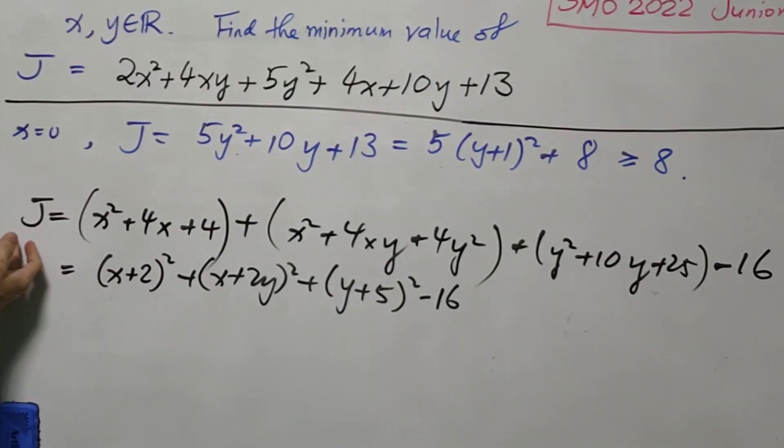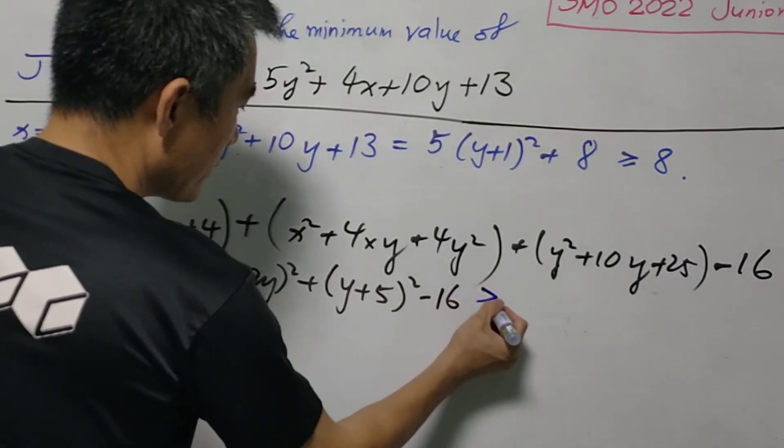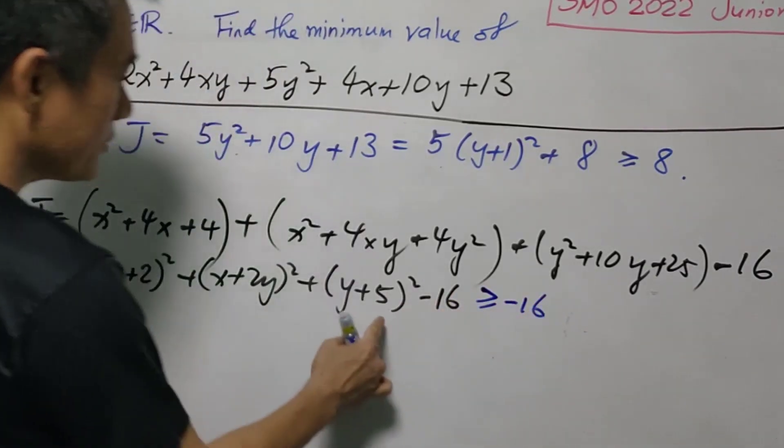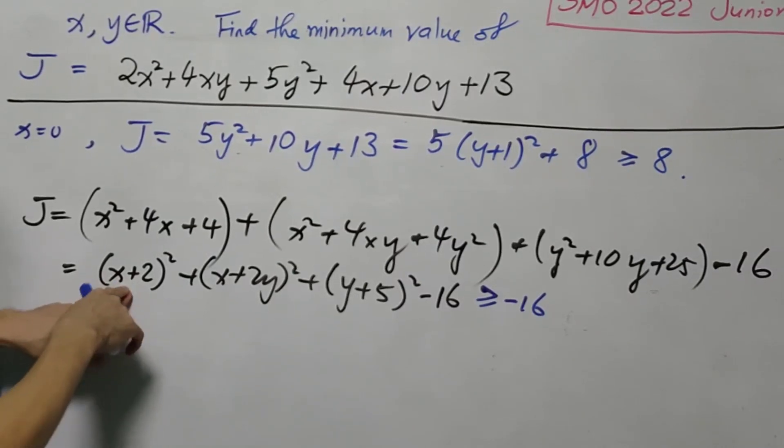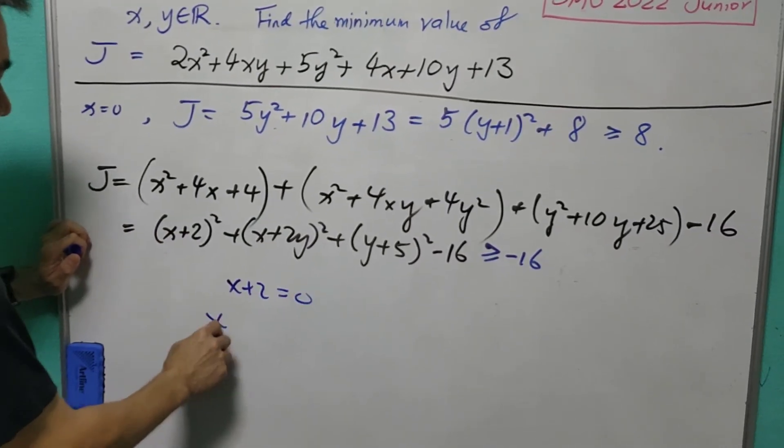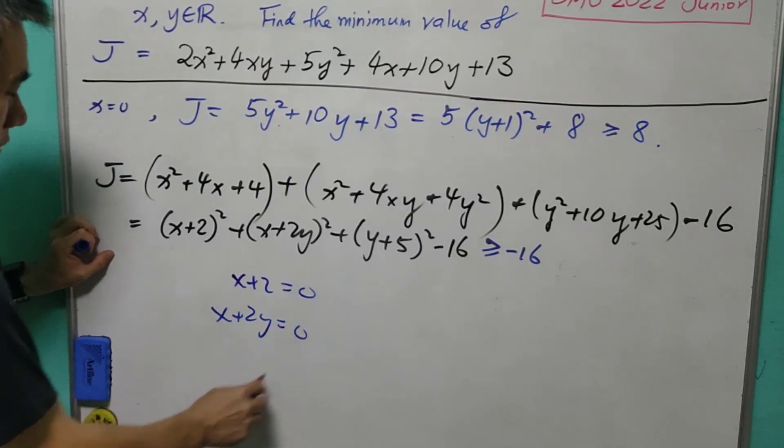Since J is expressed in this way so this will be greater than equals to negative 16 because each of the square is greater than equals to zero. That is correct. However, the equality never holds because if the equality holds meaning that x plus 2 has to be equal to zero, x plus 2y has to be equal to zero.